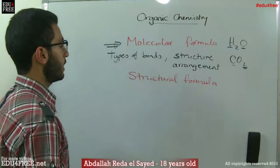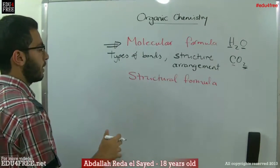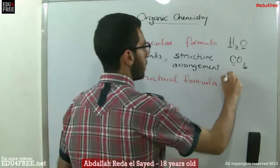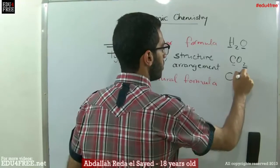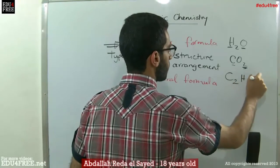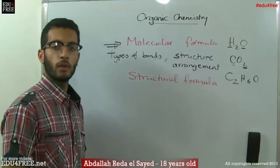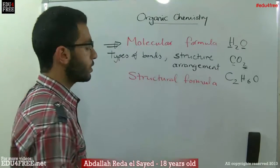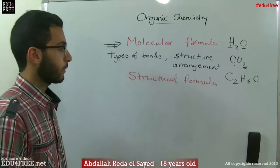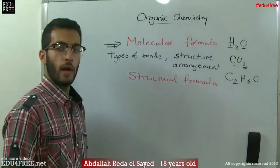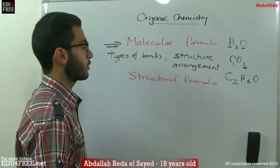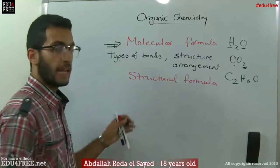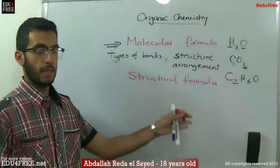The example from the book is C2H6O. This is a molecular formula, but it turns out there are two organic compounds that have the same molecular formula yet are completely different from each other. One of them is an alcohol and the other one is an ether.